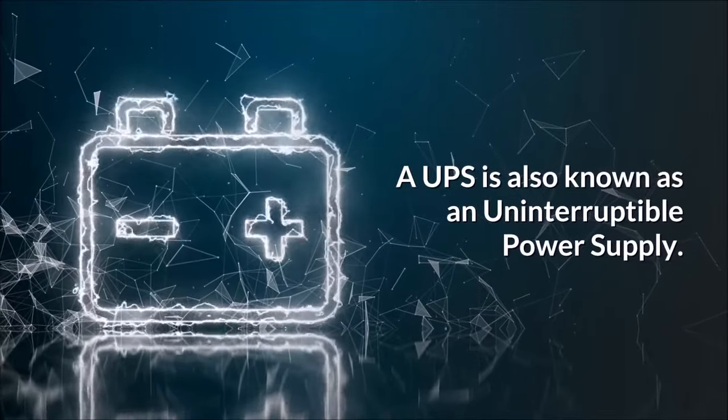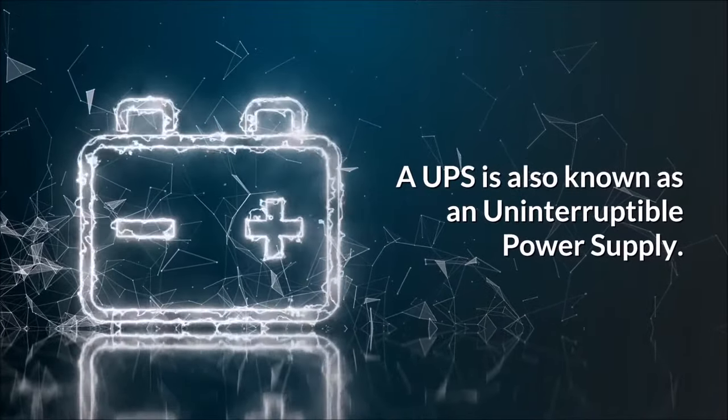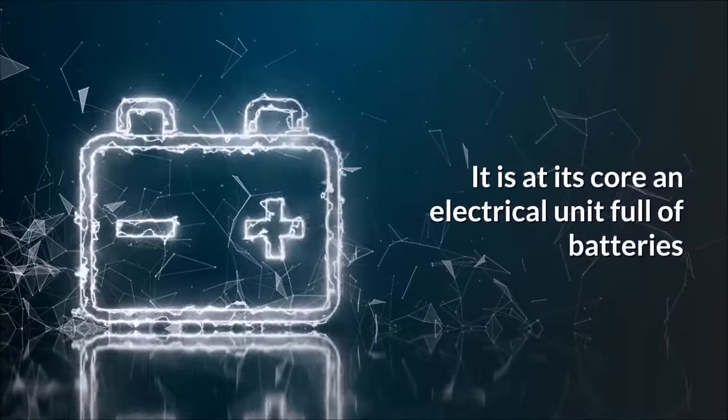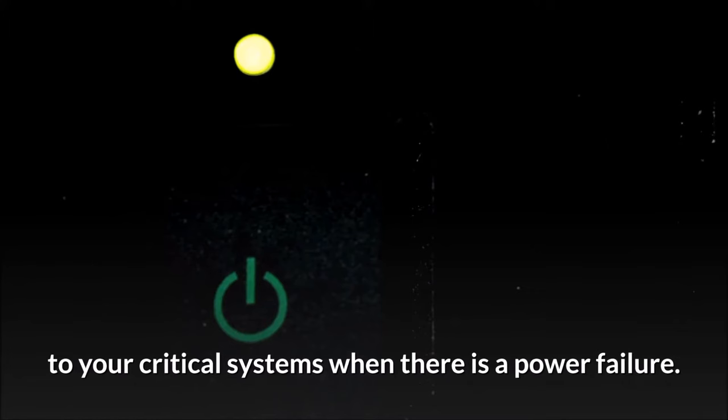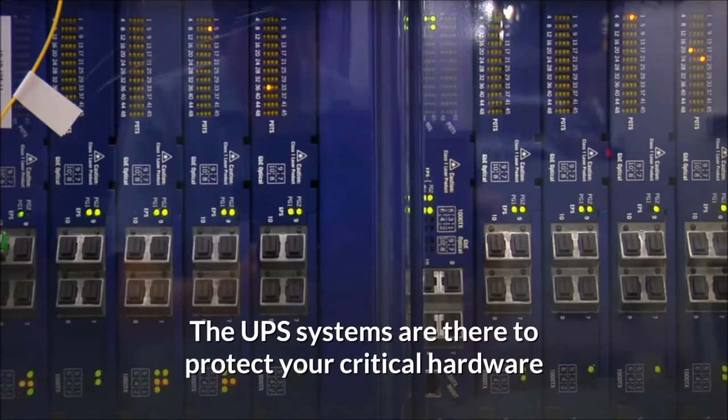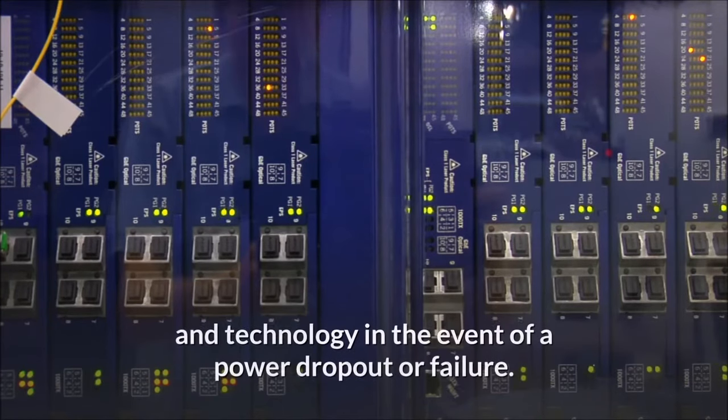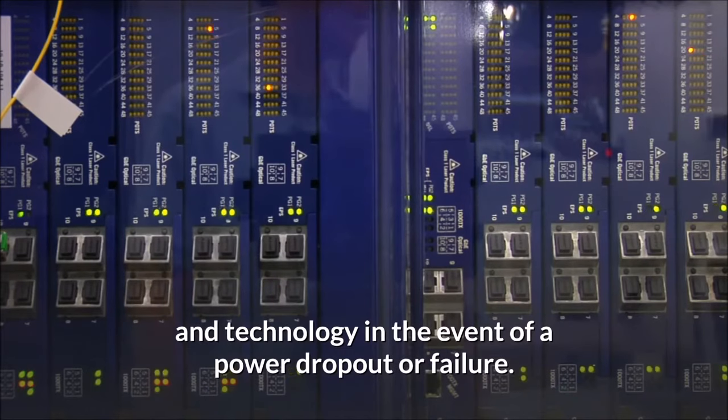A UPS is also known as an uninterruptible power supply. It is at its core an electrical unit full of batteries that can supply an emergency electrical load to your critical systems when there is a power failure. The UPS systems are there to protect your critical hardware and technology in the event of a power dropout or failure.